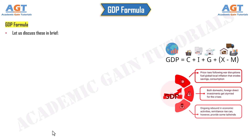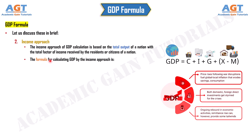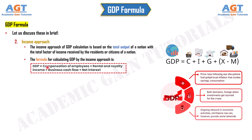Number 2: Income Approach. The income approach of GDP calculation is based on the total output of a nation with the total factor of income received by the residents or citizens of a nation. The formula for calculating GDP by the income approach is: GDP = compensation of employees + rental and royalty income + business cash flow + net interest.